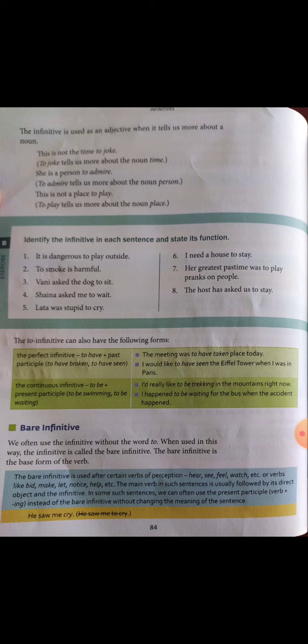For example: 'I hear the alarm ring' — 'hear' is the main verb, 'the alarm' is the direct object, and 'ring' is the bare infinitive. This can also be written as 'I hear the alarm ringing,' using the present participle. Another example: 'She let him pet the dog' — 'let' is the main verb, 'him' is the direct object, and 'pet' is the bare infinitive.